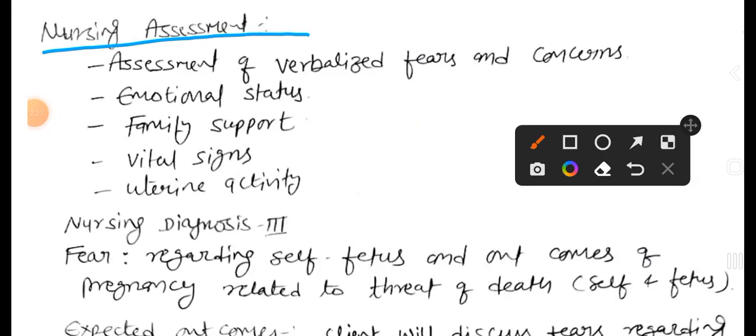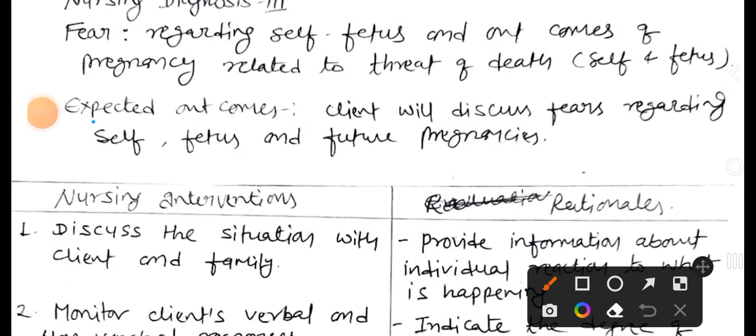Nursing diagnosis number three: we assess verbalized fear and concern, emotional status, family support, vital signs, and uterine activity. The nursing diagnosis is: fear regarding self, fetus, and outcome of pregnancy related to threat of death to self and fetus. The expected outcome is that the client will discuss fear regarding self, fetus, and future pregnancies.